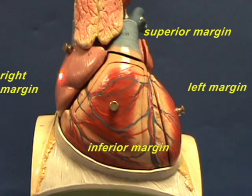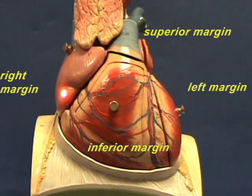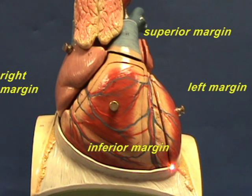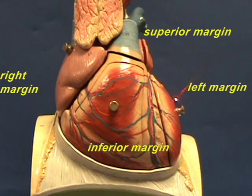Notice that practically all of the right margin is made up of the wall of the right atrium. So this is the right atrial chamber right over here and this is forming the right margin. The inferior margin is mostly the wall of the right ventricle and just a little bit of the left ventricle. The left margin is mostly the left ventricle and a little bit of the left atrium.